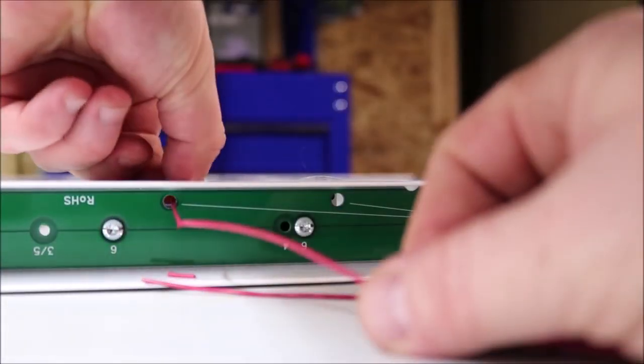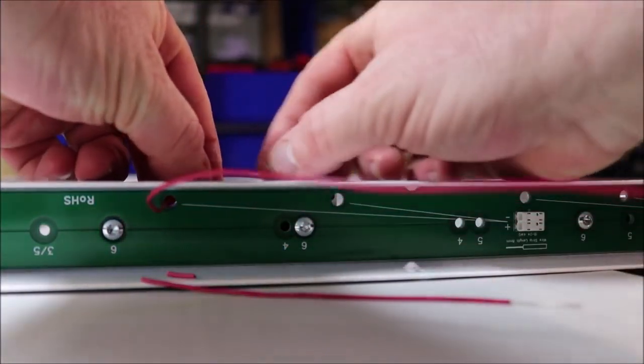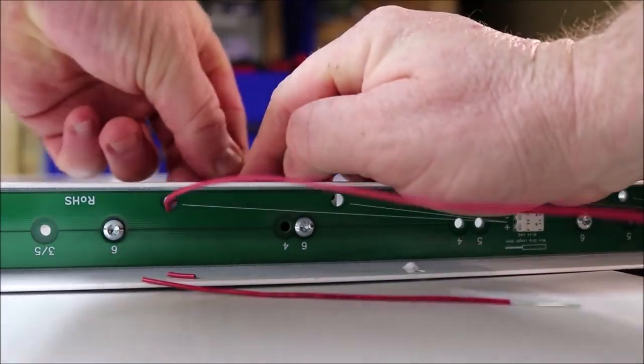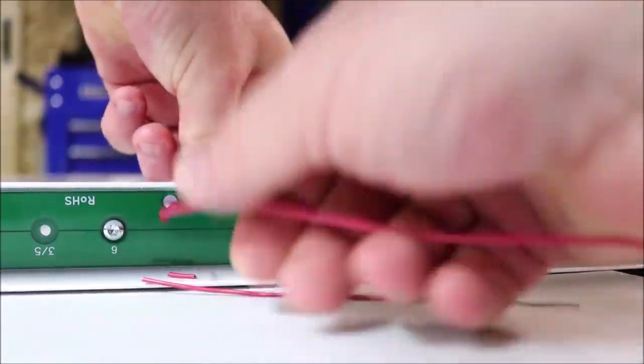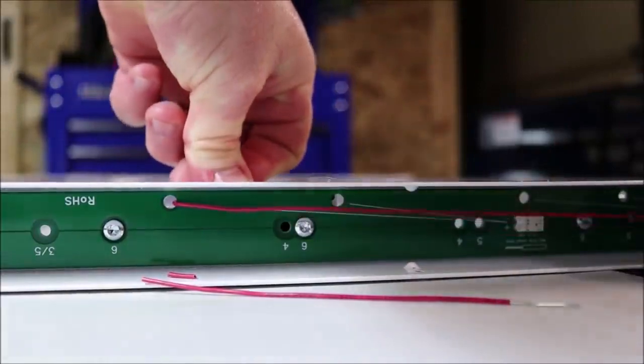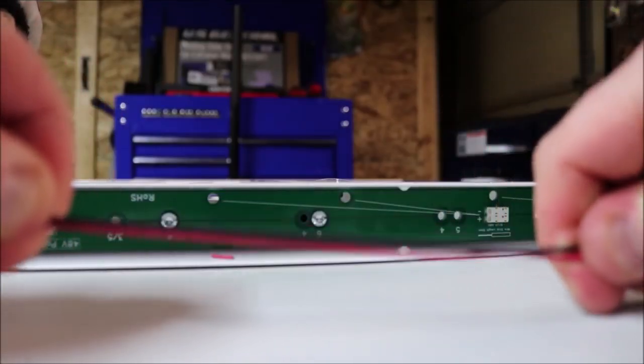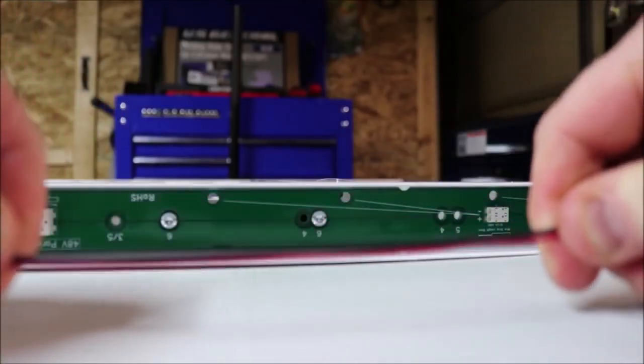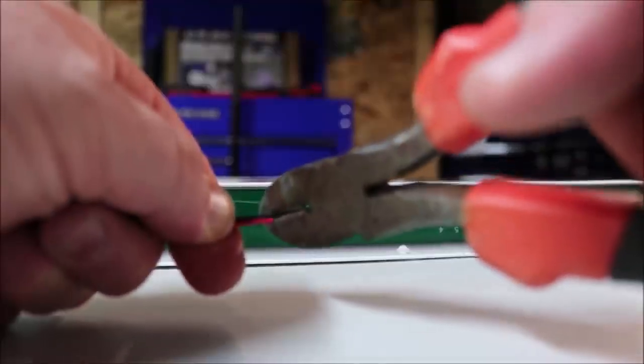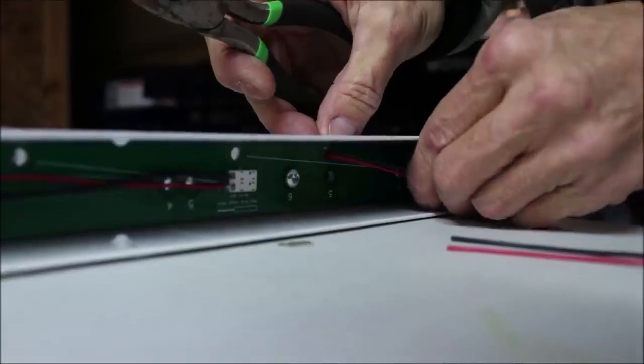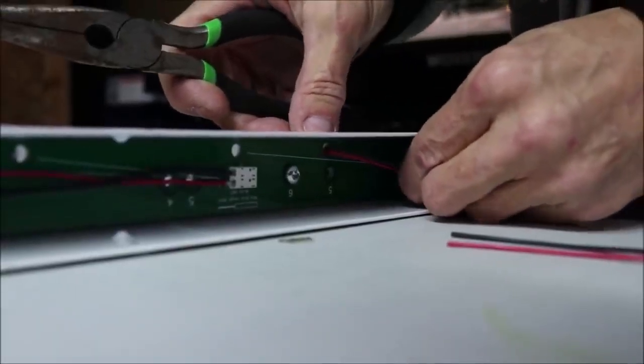We did use our fingers. I went ahead and jumped ahead and started measuring out the rest of the positive and negative wires for all the light boards, and he went right behind me and just started connecting them. Of course, once you measure out one, you can use the other one to measure the negative wire out. It makes it a lot quicker.